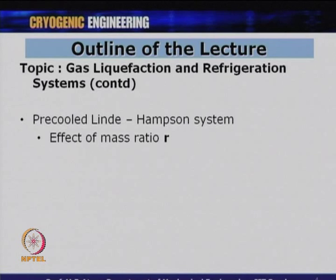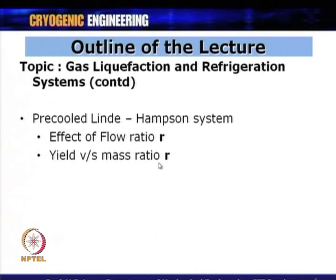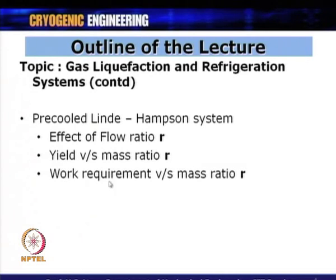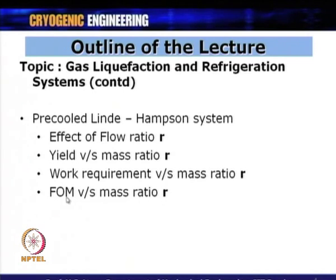The parameters to be studied include: the effect of mass ratio R, which is the ratio of the mass flow rate of the refrigerant to the mass flow rate of the gas to be liquefied (M-dot-R / M-dot). Then yield versus mass ratio R — the liquefaction yield Y as a function of R is a very important relationship. Also, the compressor work requirement per gram of mass compressed, the work requirement per gram of gas liquefied, and finally figure of merit versus mass ratio R.